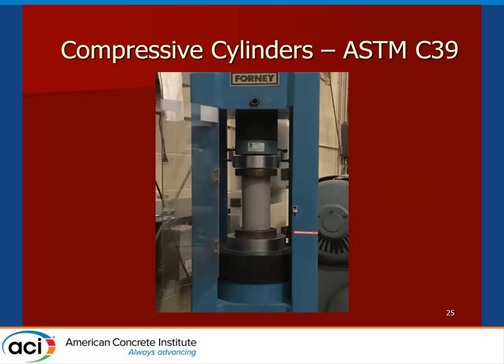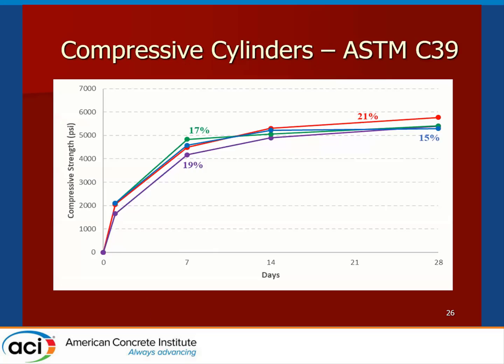For the results, basic compressive strength showed an expected gain running from about 2,000 PSI at one day to 5,000 to 6,000 PSI at 28 days. So at a water-to-cement ratio of 0.5, we were getting sound, high-quality, high compressive strength concrete.